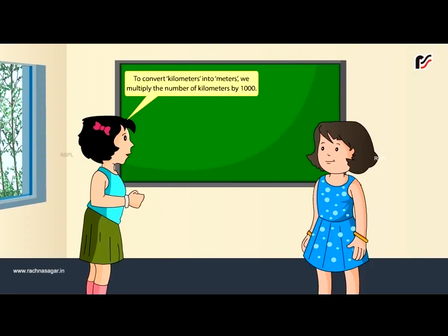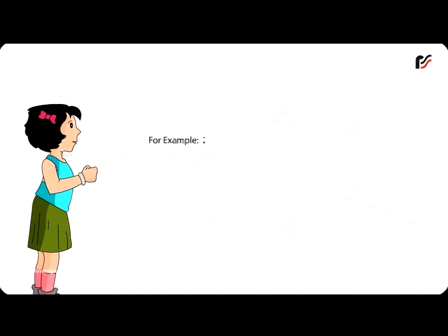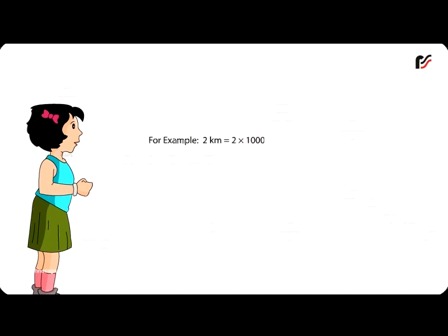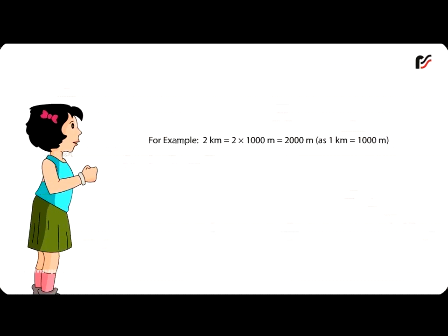To convert kilometers into meters, we multiply the number of kilometers by 1000. For example, 2 km = 2 × 1000 m = 2000 m, as 1 kilometer is equal to 1000 meters.